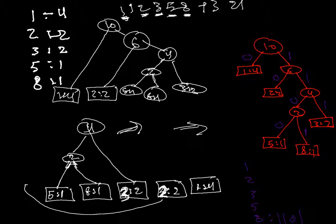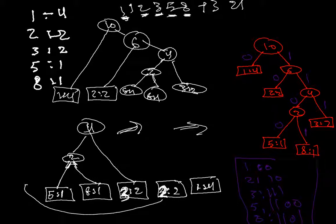This is one, one, zero, one — and this one is one, one, zero, zero. One is one, one, zero, zero, three. Three: one, one, one, one. And two is: one, zero. And the last one is one, which is just zero. So this is the Huffman code.